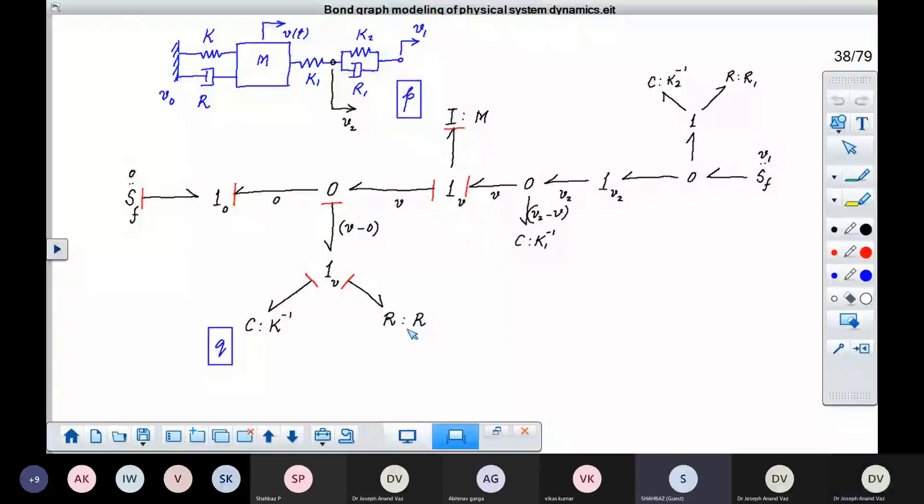So this part, we know how to model. We have done it. We have added this part here, this additional system over here. How do you model this? Up till this motion of the mass, we knew how it could be done. How should we do it for this part?